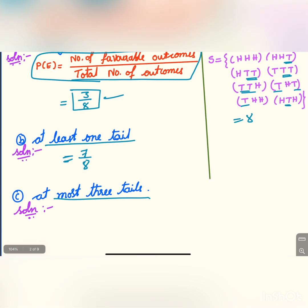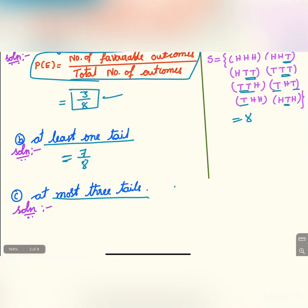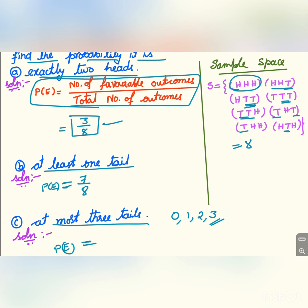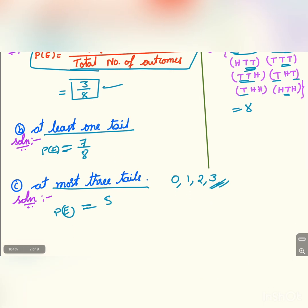At most three tails means it should have either zero, one, two, or three tails. So this includes all cases: zero tails which is HHH, and all other cases where one, two, or three tails are present. Number of favorable outcomes is eight and total number of outcomes is also eight, so 8/8.